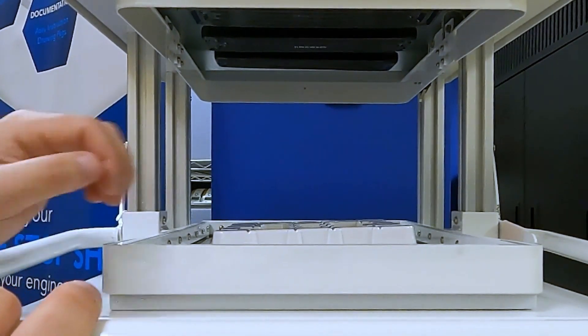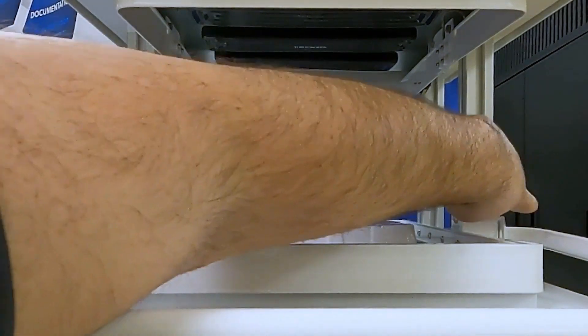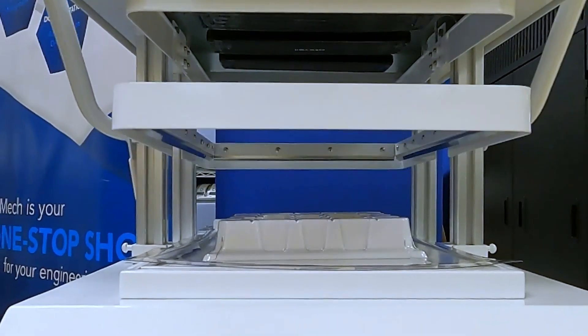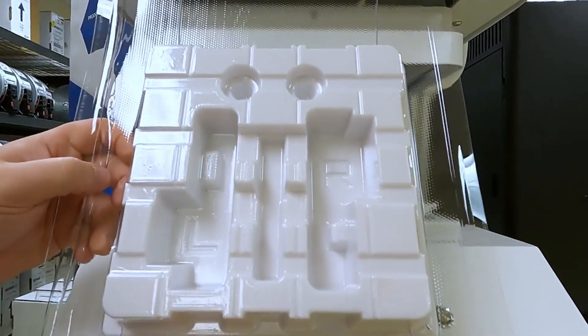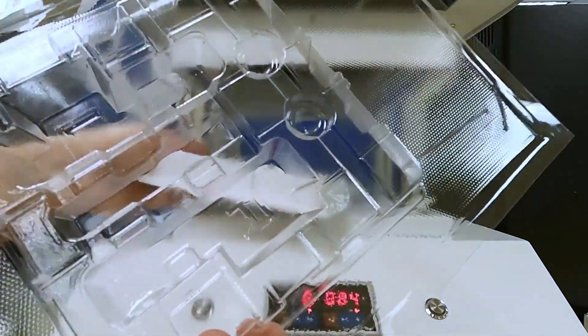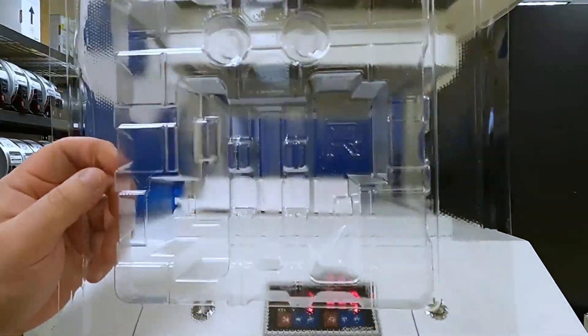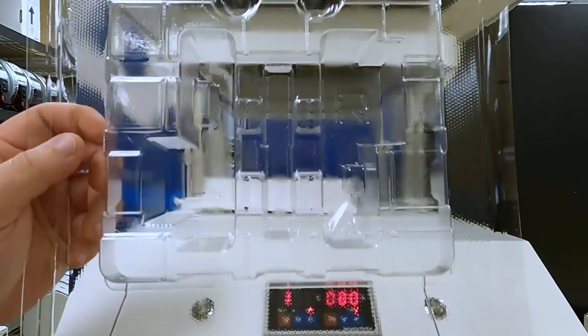And once we have the part pulled, it cools really quickly, and then we can remove our mold from the sheet, and we have our thermoform sheet left over. And we're going to do the same thing one more time for the cap part.